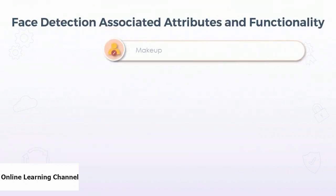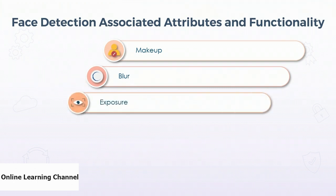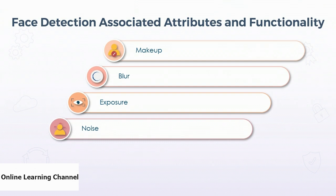The API can also detect makeup and categorize it into boolean values for everywhere it can be applied, such as eye makeup and lip makeup. Another attribute the API can return is the overall blurriness of the face, given as a value between 0 and 1 with an informal rating of low, medium, or high. The face service can also find the exposure of the image, given between 0 and 1 with a rating of underexposed, good, or overexposed. Similarly, the face service can detect if the image has any noise that could affect quality, rated low, medium, or high.